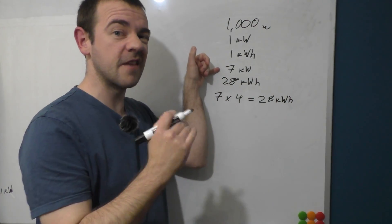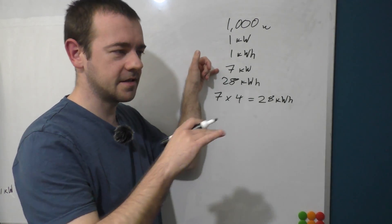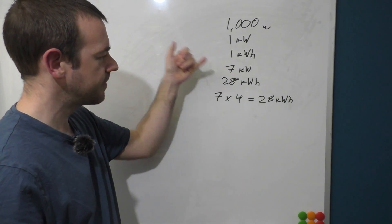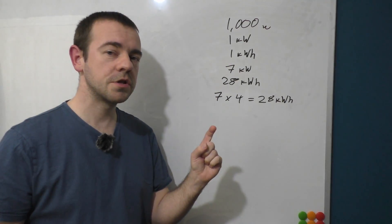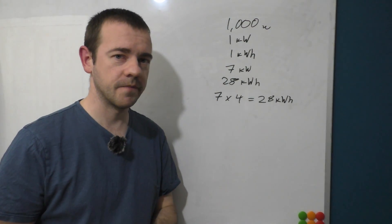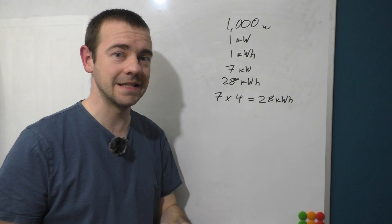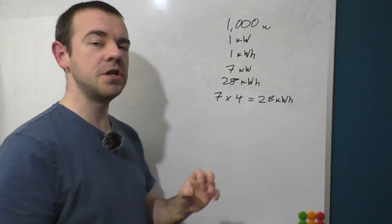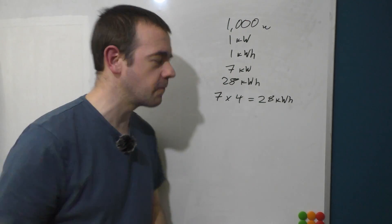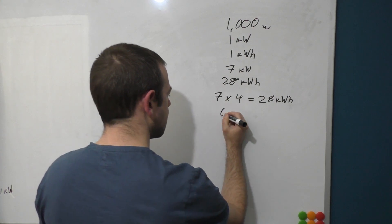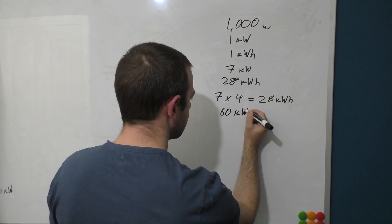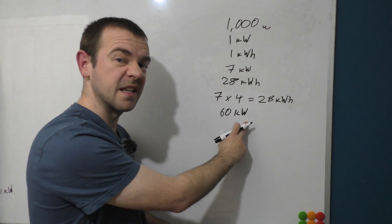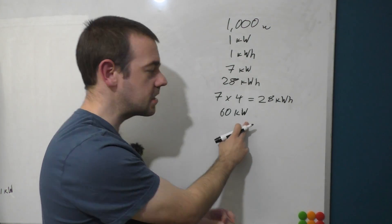So it would take something running a constant seven kilowatts, which obviously is theoretical here on a charger, four hours from zero to full. Now let's imagine you get on a rapid charger. I'm gonna pick a figure just to make it easy in terms of maths, but let's imagine you get a 60 kilowatt charger. That will give you one kilowatt-hours of energy per minute.